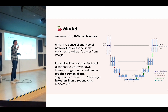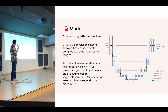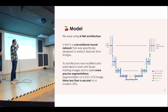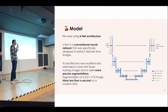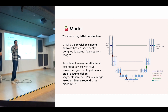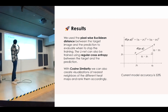The next step was choosing which model architecture to use. We decided to use a U-Net architecture. This architecture was created by the University of Freiburg to solve image segmentation in the biomedical area. The problem was similar to ours, which was one reason we chose it. The other reason is that this architecture can work well without needing a huge amount of training data, so it was a good match for us.